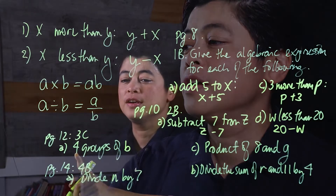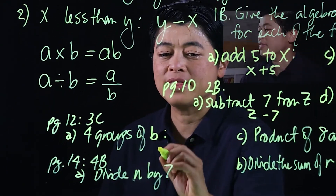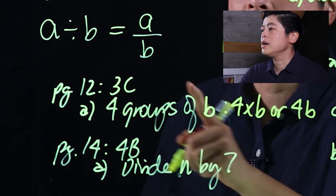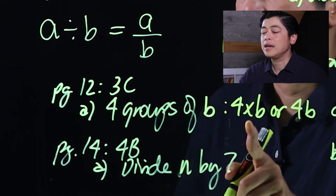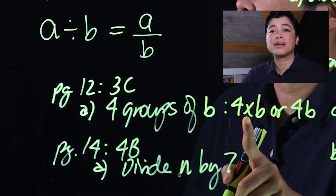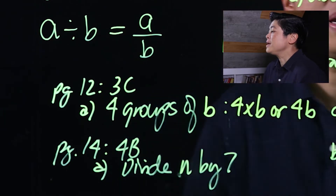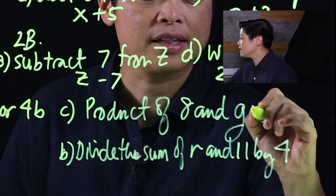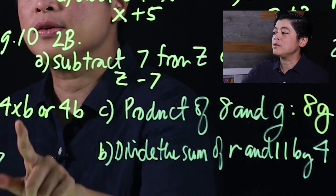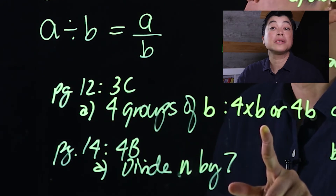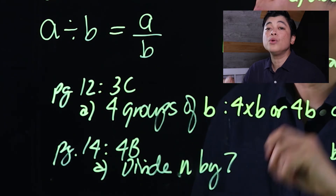On page 12, item 3c says 'four groups of b.' That could be four times b, but as mentioned, it's better to write it without the × sign, so we write 4b. Similarly, 'the product of 8 and g' is written as 8g. Going forward, you won't see me write the multiplication sign — I'll write straight to 4b or 8g.